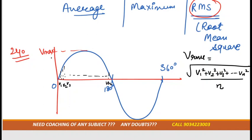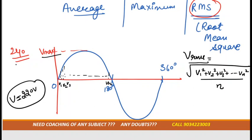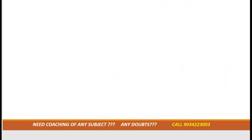Now you know the difference between the maximum value and the RMS value. At our home, the voltage we get from the government supply is 220 volts — at the socket we get 220V. According to you, should this be the maximum voltage or the RMS voltage? Correct — it is the RMS value. We get RMS from the government side, so for all calculations we will use RMS only.